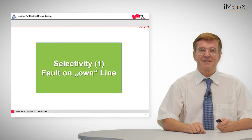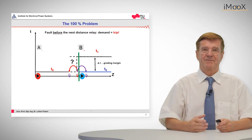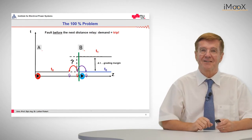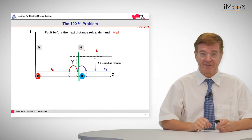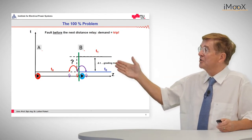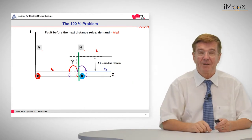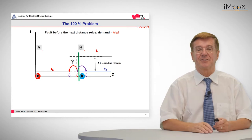The selectivity means that if a fault is on the own line, the relay will trip. But there are little difficulties due to measuring errors. So let's see what happens if we have a fault shortly before the end of the own line, that is substation B, and what happens if this measurement is inaccurate.